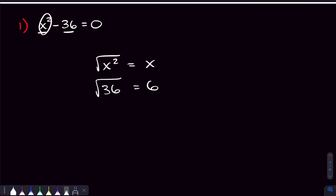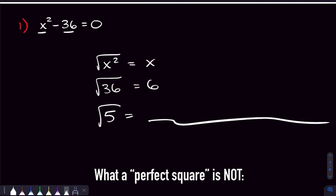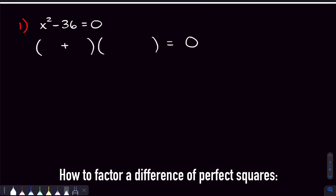What's an example of something that's not a perfect square? Five is not a perfect square, because if you square root that, you're going to get a super long decimal. So in the x squared minus 36 case, we have a difference of perfect squares, and when we have that, we factor it by making one set of parentheses have a plus and one have a minus. The square root of the first term goes in the first two spots.